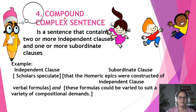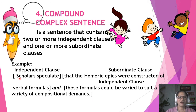Number 4: Compound-Complex Sentence. It is a sentence that contains two or more independent clauses and one or more subordinate clauses. Example: 'Scholars speculate that the Homeric epics were constructed of verbal formulas, and these formulas could be varied to suit a variety of compositional demands.' 'Scholars speculate that the Homeric epics were constructed of verbal formulas' contains a subordinate clause with a subordinating conjunction. 'These formulas could be varied to suit a variety of compositional demands' is an independent clause.